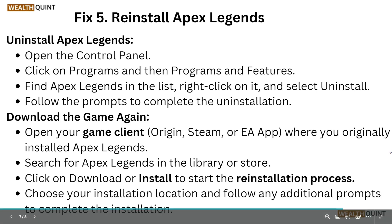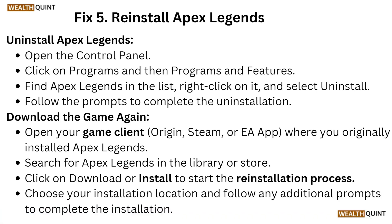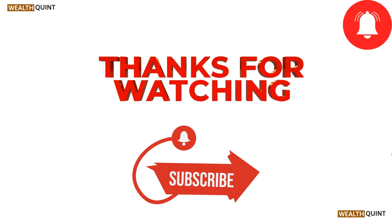After uninstalling, download the game again. Open your game client — Origin, Steam, or the EA app — where you originally installed Apex Legends, and search for it in the library or store. Click Download, start the installation process, choose your installation location, and follow any additional prompts to complete the installation. That's how you can resolve this problem. Thank you for watching.